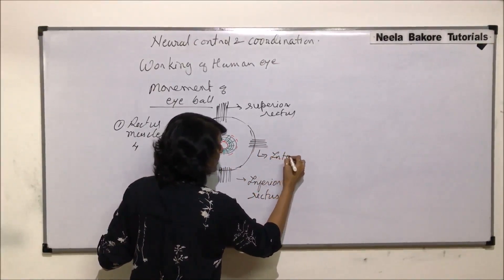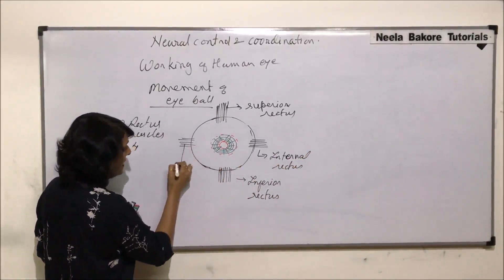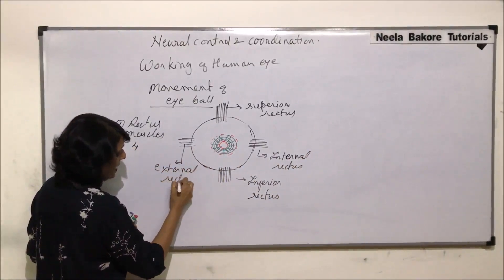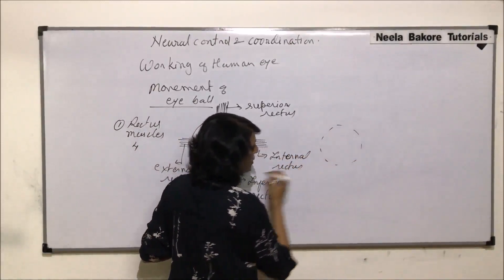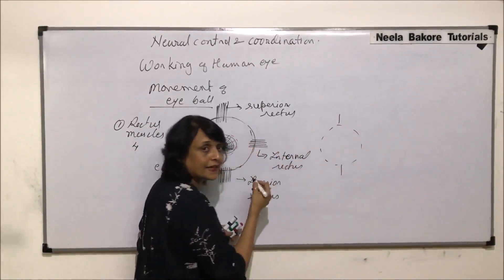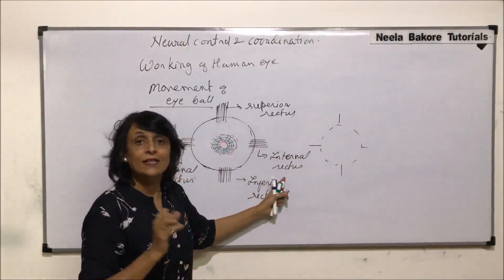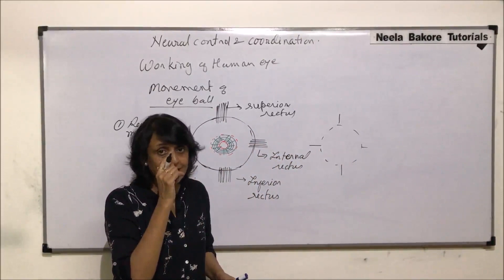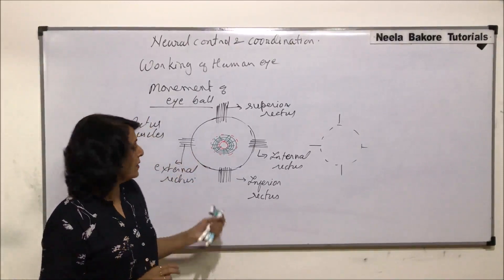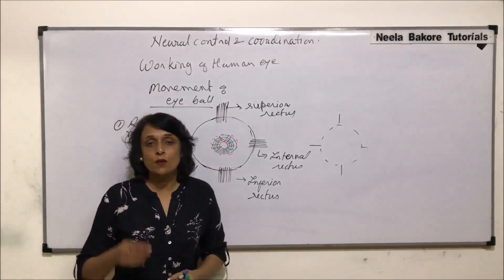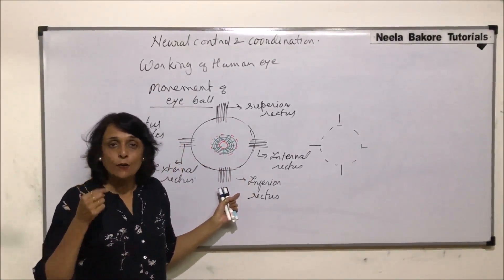The muscle on the outer side is called external rectus. Internal rectus is towards the canthus, where the nictitating membrane is — that is the inner muscle. When the superior rectus muscle contracts, the eyeball moves up; when the inferior rectus contracts, the eyeball goes down.